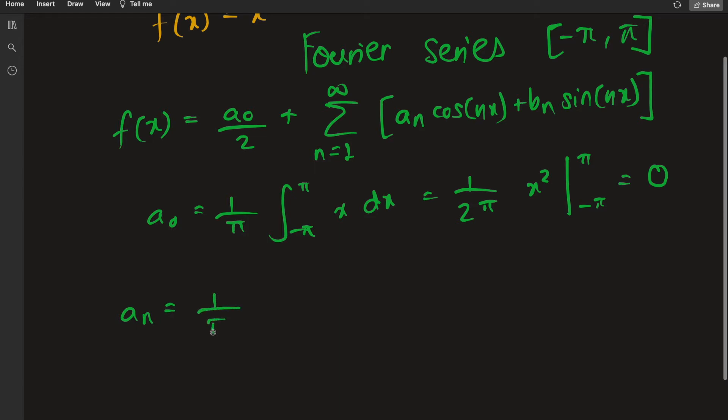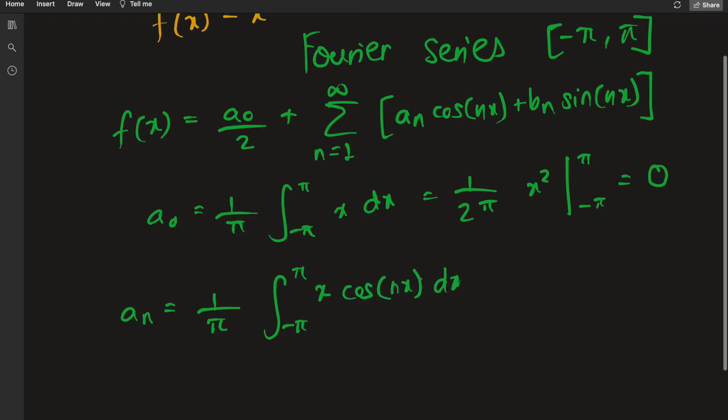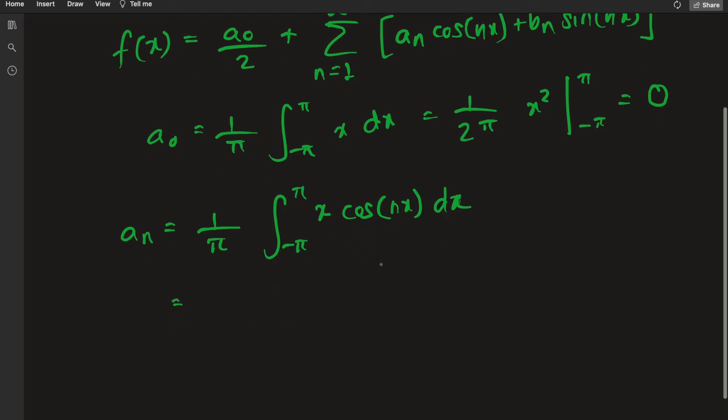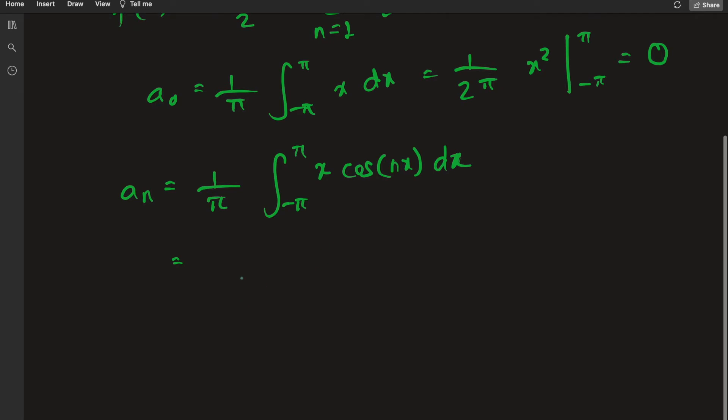Let's calculate aₙ. aₙ has a similar formula of calculation: 1 over π integral negative π to π f(x) times cosine of nx. In this case f(x) is just x cosine of nx dx. In higher examples this integral can get ugly, but in our case it's simple, it's just integration by parts. So I'm going to integrate over the cosine and basically differentiate over the x.